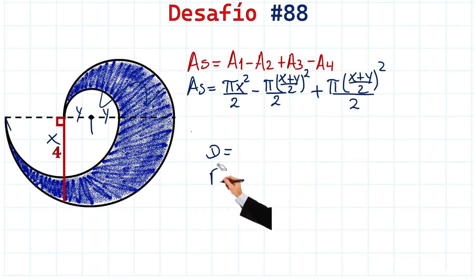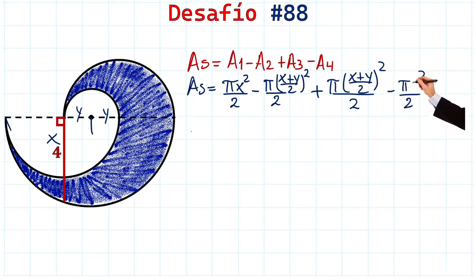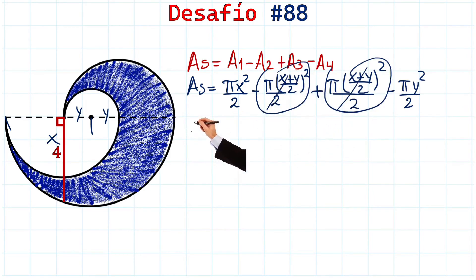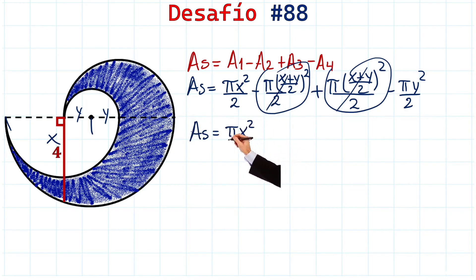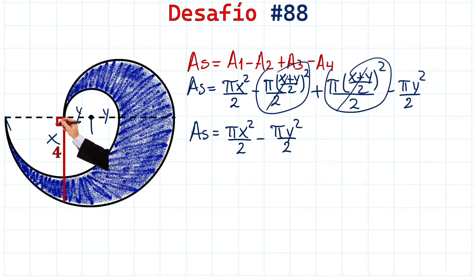Finally, Area 4 is this part here, so we have minus π times the radius squared divided by 2, and the radius is y. Now look at this — we have the same term for Area 2 and Area 3, so they cancel each other out. What we have left is the shaded area equals πx² / 2 minus πy² / 2.